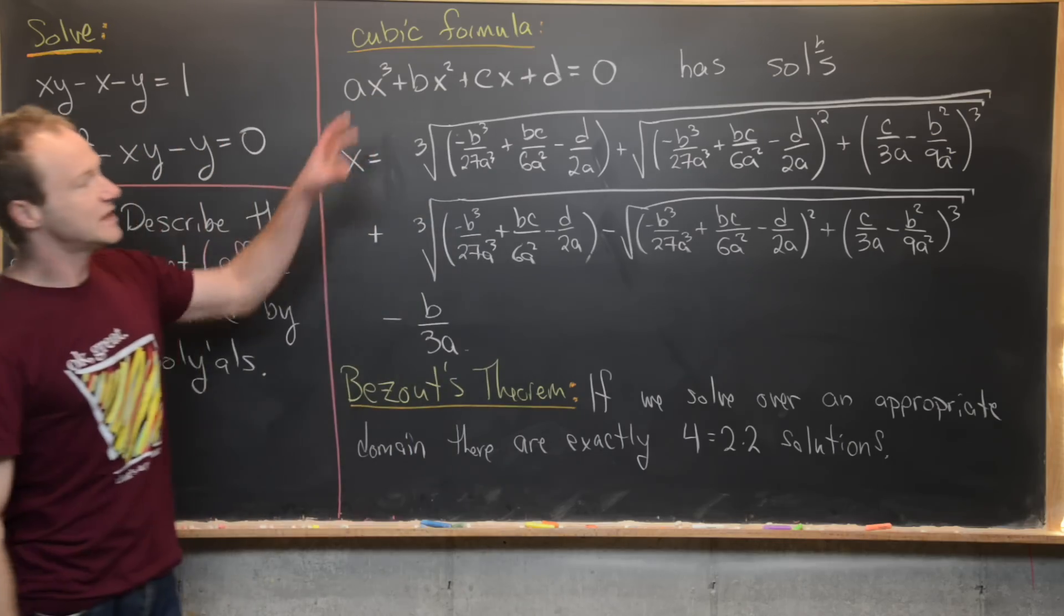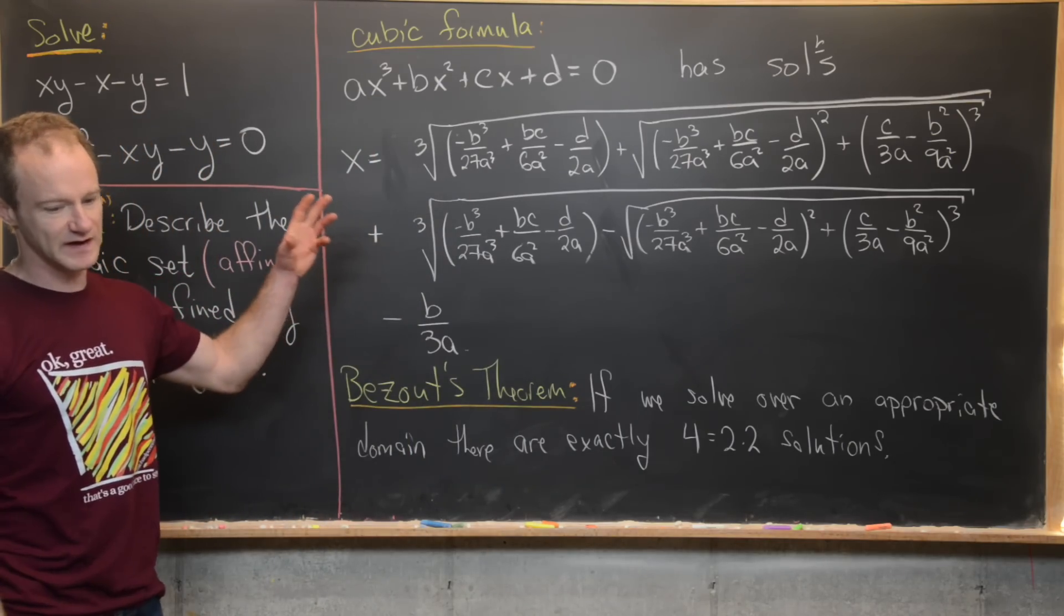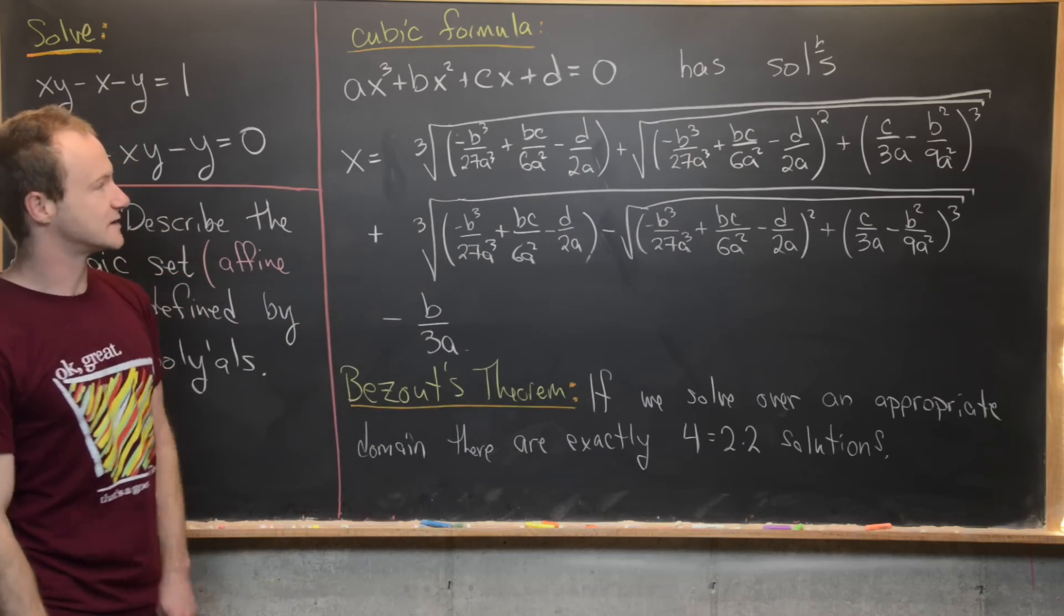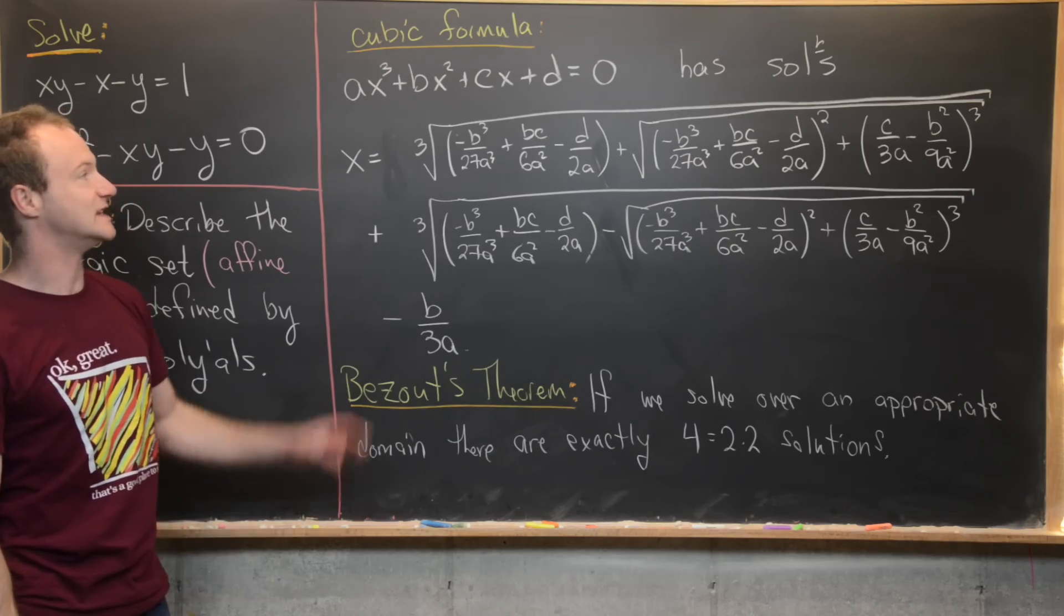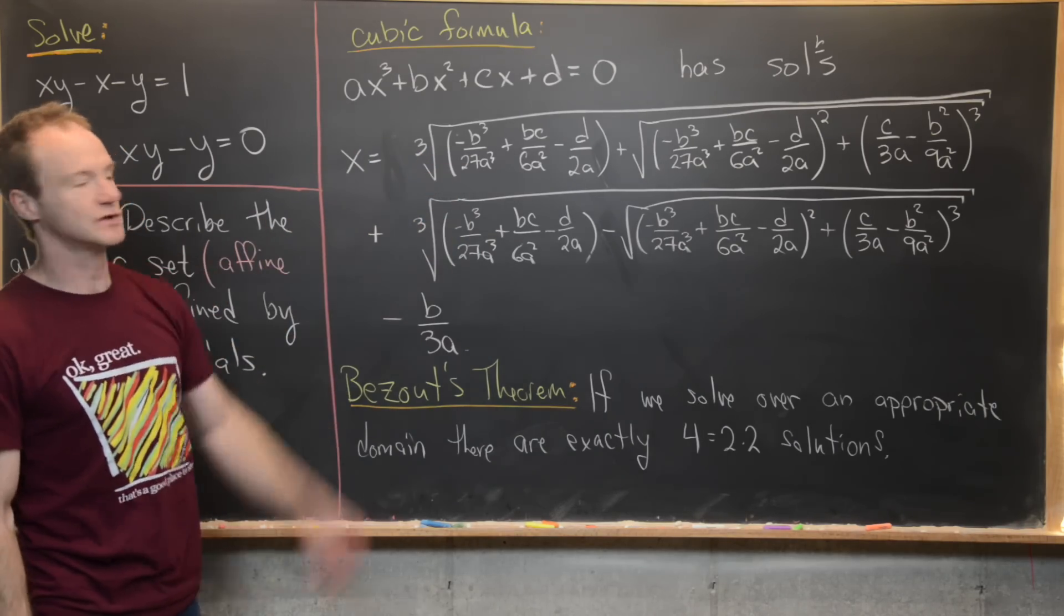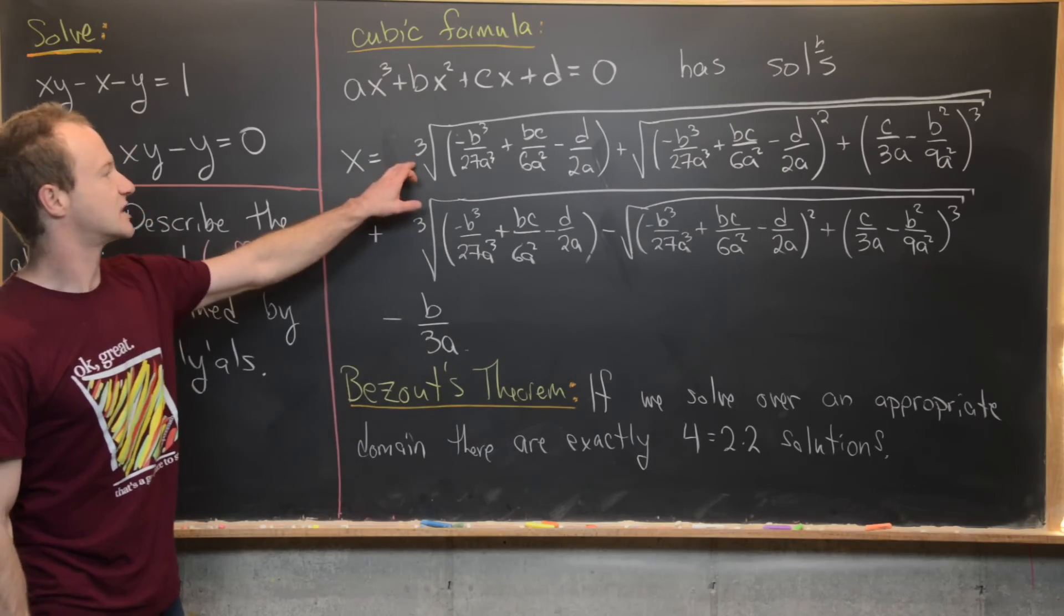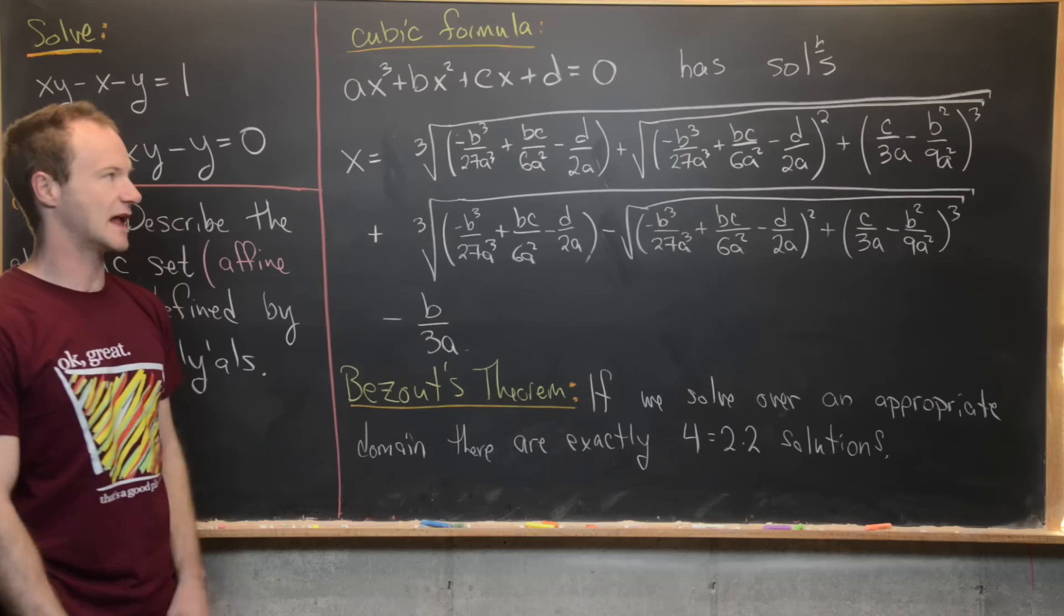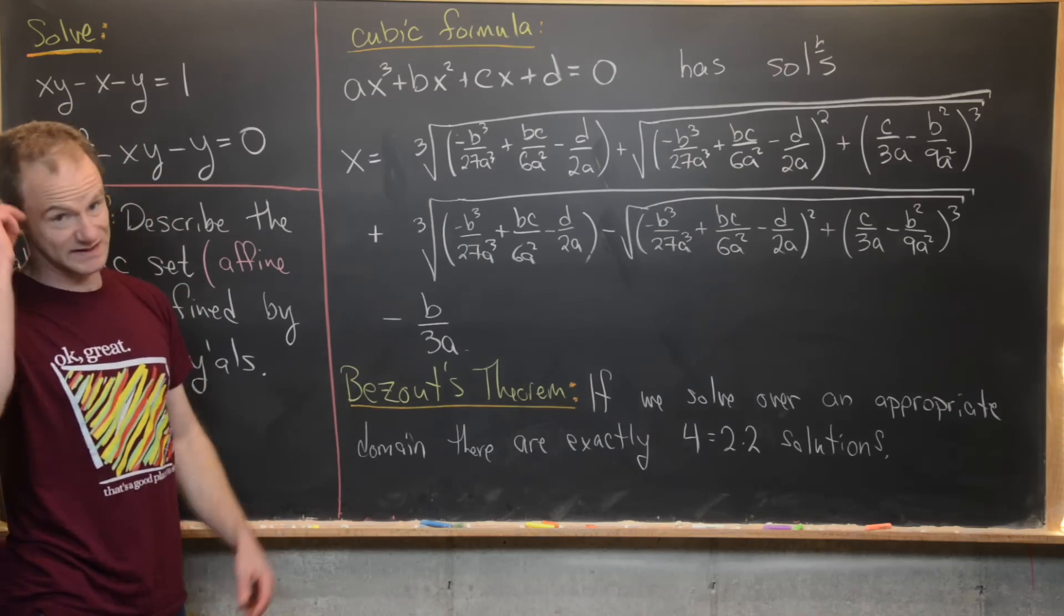Okay so we're going to use the cubic formula in order to solve this. So the cubic formula is really heinous and we're not going to derive it or anything. But it boils down to this. So we've got ax³ + bx² + cx + d = 0 has the following solutions. So I've got solutions there even though right now I only have one solution. So it's the cube root of all of this stuff. You can look at it if you want to or maybe look it up on wikipedia if you want to see it all typed out.